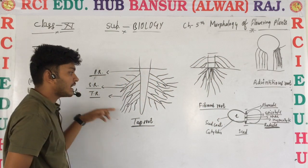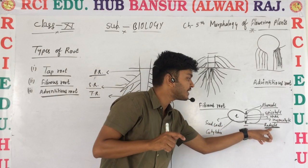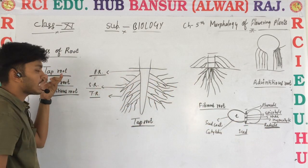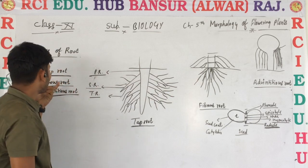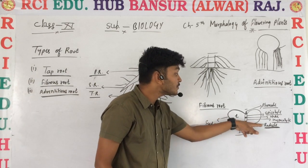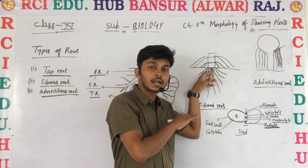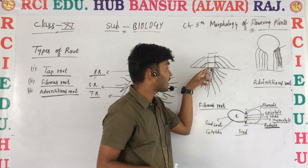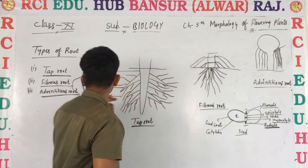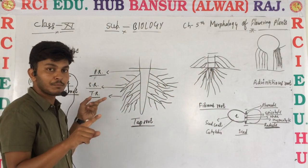To summarize: tap root — if the roots are originated from the radical, the roots are known as tap roots; examples are dicots. Fibrous root — if the roots emerge from the radical but after some time those roots are destroyed and new roots arise from the base of the stem, those roots are known as fibrous roots; examples are monocots. Adventitious root — if the roots are emerging from any part of the plant except the radical, those roots are known as adventitious roots.